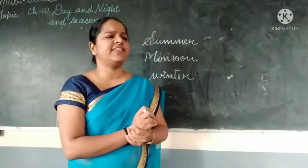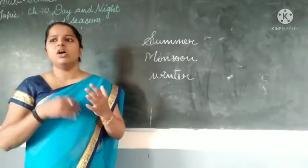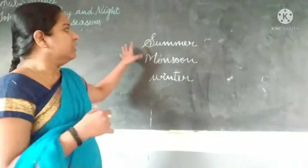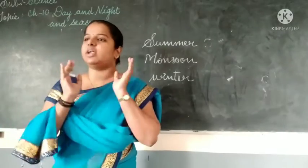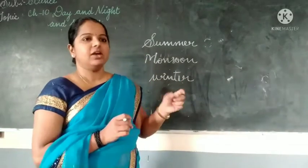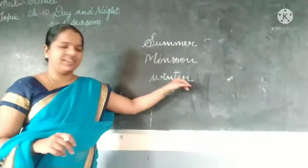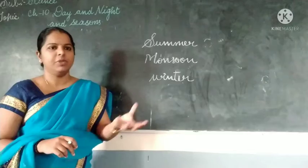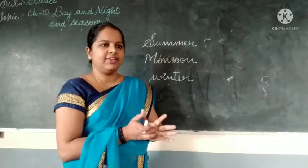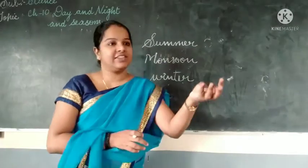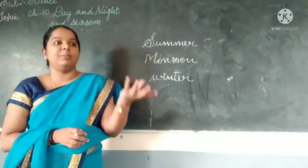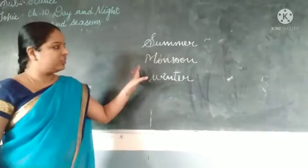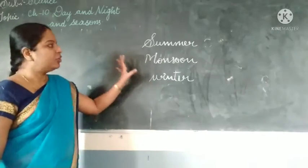Have you ever thought how the season is changing according to the months? We are going to learn that. Summer, monsoon, and winter are the three main seasons. Spring and autumn come within the winter season only. In spring you can see flowers blossoming, and in autumn the leaves are falling down. This all happens in December — different types of flowers you can see. This all comes in the winter season.